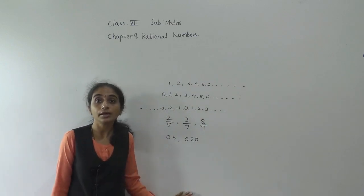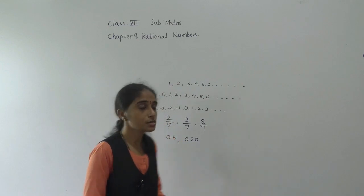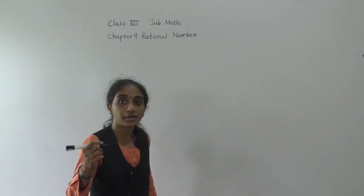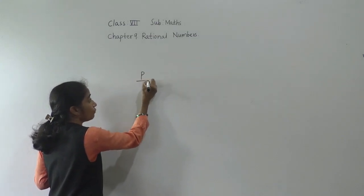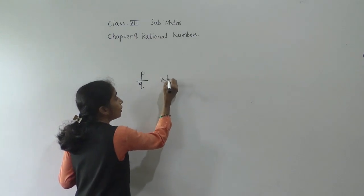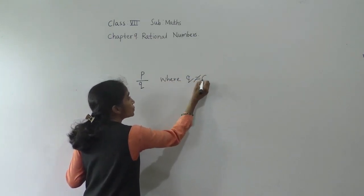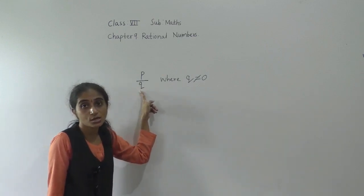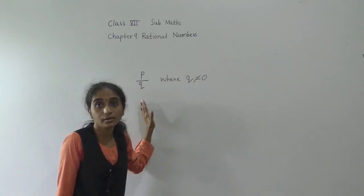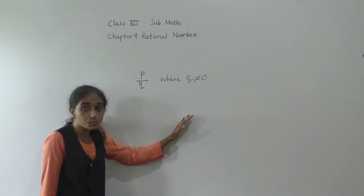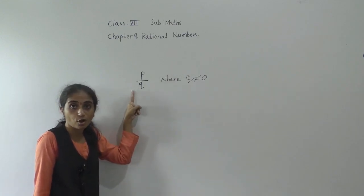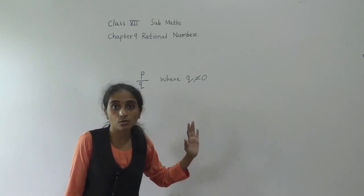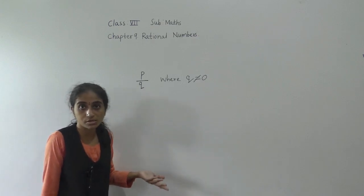So all these numbers will come under rational numbers. What is a rational number? A number that can be expressed in the form of P upon Q, where Q is not equal to 0, is called a rational number.